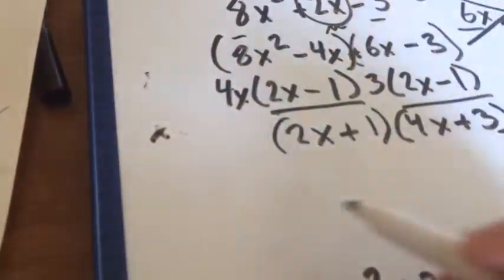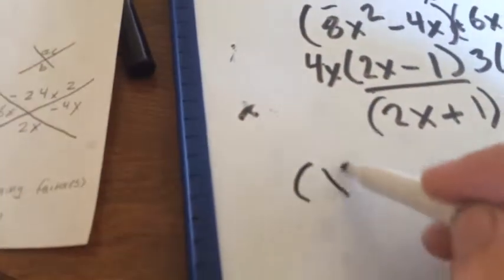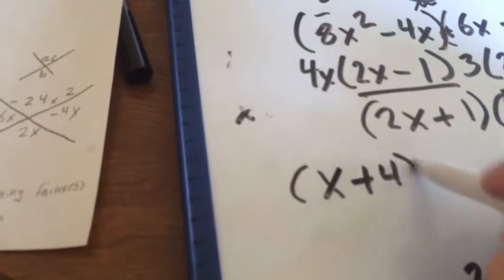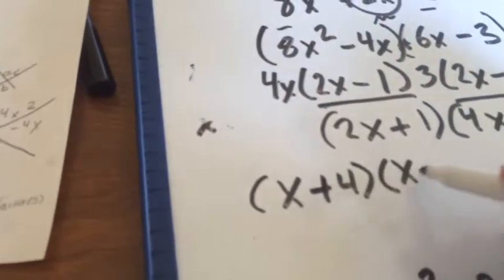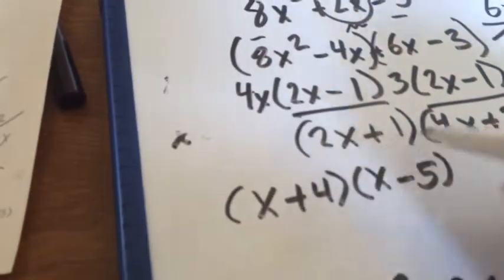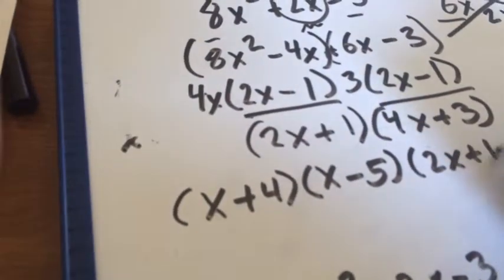All together, the ones you were given, x plus 4, and x minus 5. And then, the 2 you just got, which are 2x plus 1 and 4x plus 3.